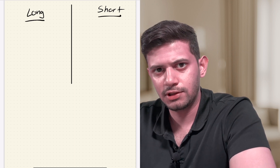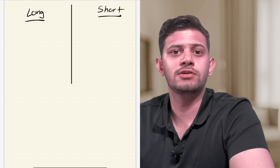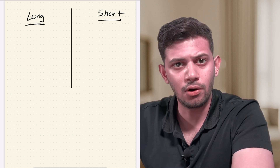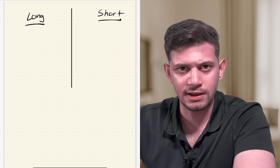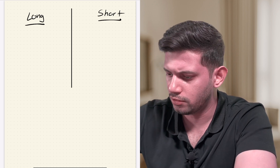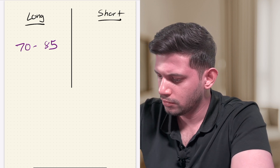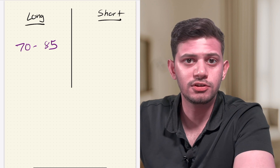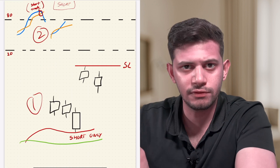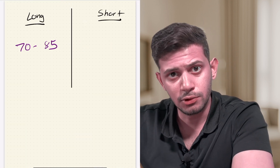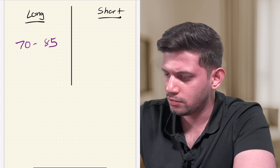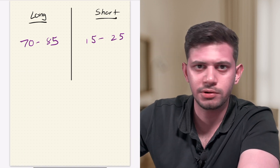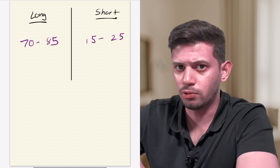One important note: the stochastic-based stop loss only triggers when the lines are within a specific range. For the long condition, the blue line crossing below the orange line is a stop loss only when the stochastic is in the range of 70 to 85. For the short condition, the blue line crossing above the orange line is a stop loss only when the stochastic is in the range of 15 to 25. If you're having trouble visualizing this, don't worry — we're moving to the charts now.